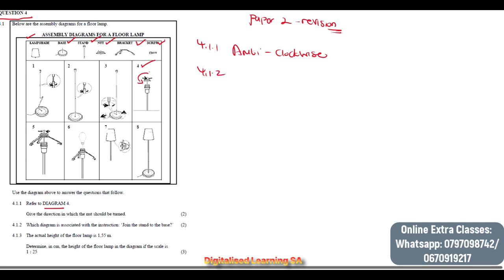Next, question 4.1.2 asks: which diagram is associated with the instruction 'join the stand to the base'? If we check, we can see that diagram 3 is pointing at the base and shows how the base looks. So our answer will be diagram 3.